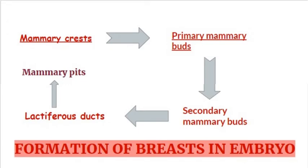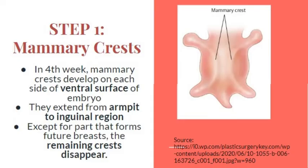This is the sequence of formation of the breast: from mammary crests, to primary mammary buds, to secondary mammary buds, to lactiferous ducts, and then mammary pits are formed. Step 1 — formation of mammary crests: in the fourth week, mammary crests develop on each side